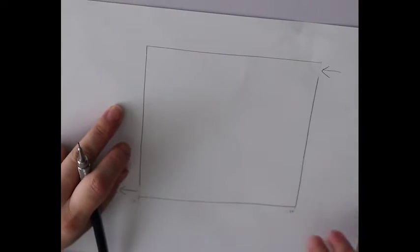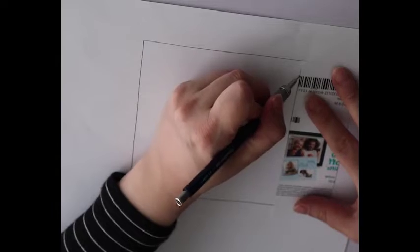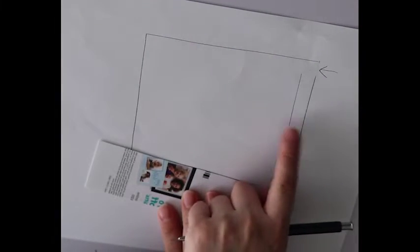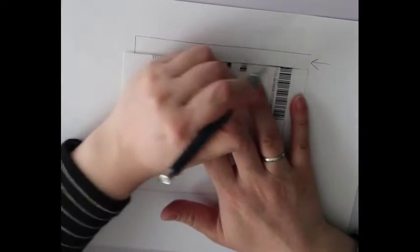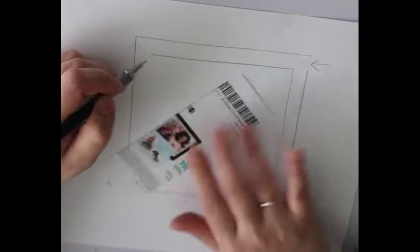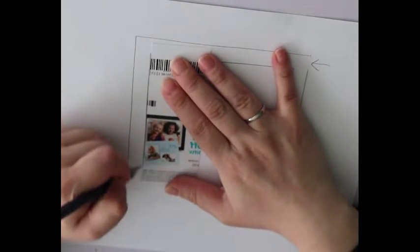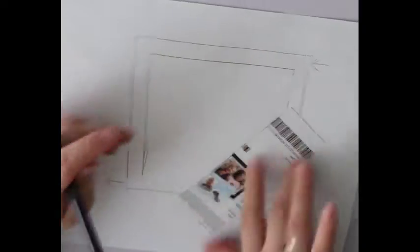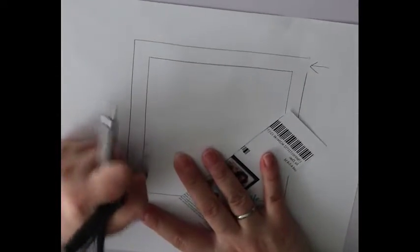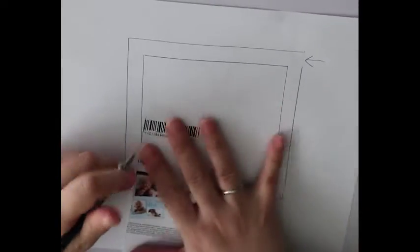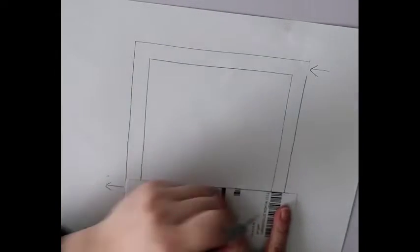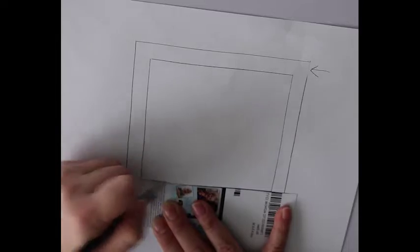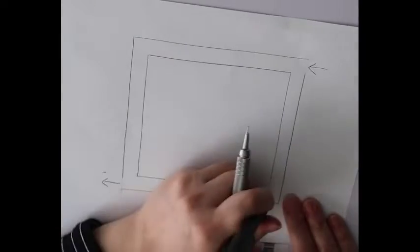Now inside this square I drew, I'm going to draw another square. Probably the distance between these two squares is like one centimeter or half inch, about half inch. Make sure I'm drawing straight lines. So I drew another square inside the square that I drew previously.